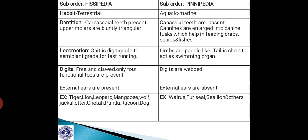With reference to locomotion, in Fissipedia the gait is digitigrade to semi-plantigrade for fast running. Whereas in Pinnipedia, the limbs are paddle-like, which is required for their aquatic mode of life, and the tail is short to act as a swimming organ. With reference to digits, in Fissipedia they are free and clawed, with only four functional toes present. Whereas in Pinnipedia, the digits are webbed.